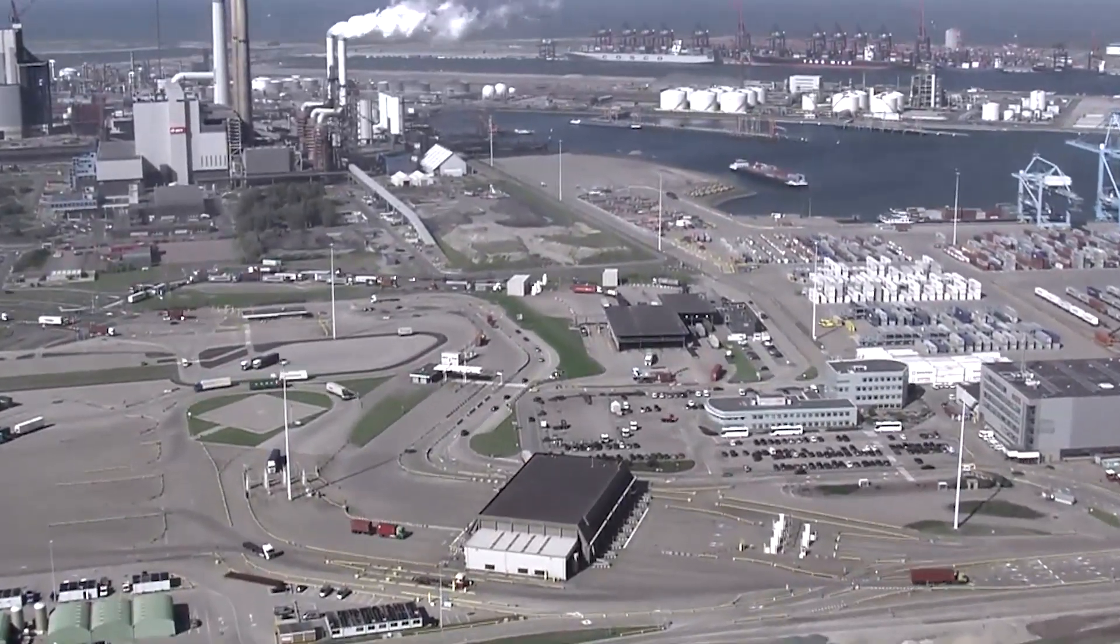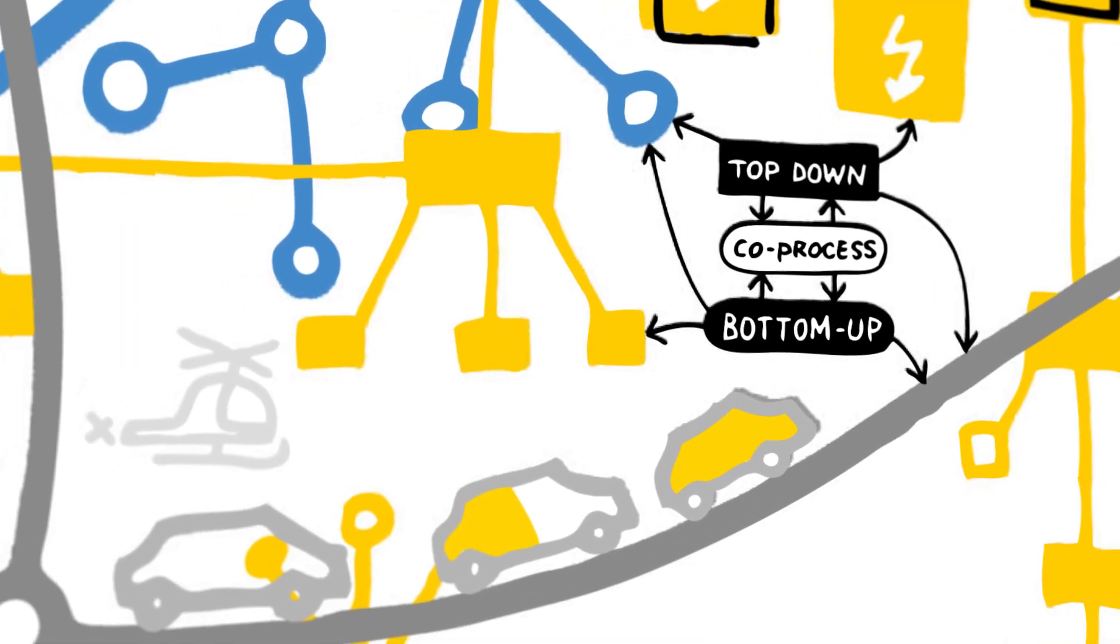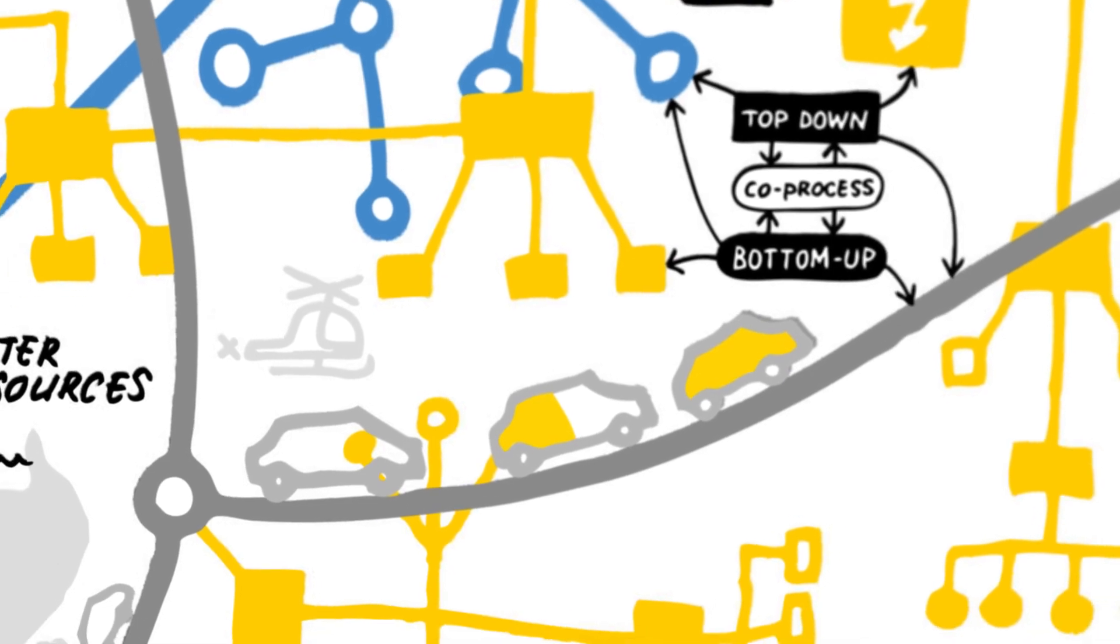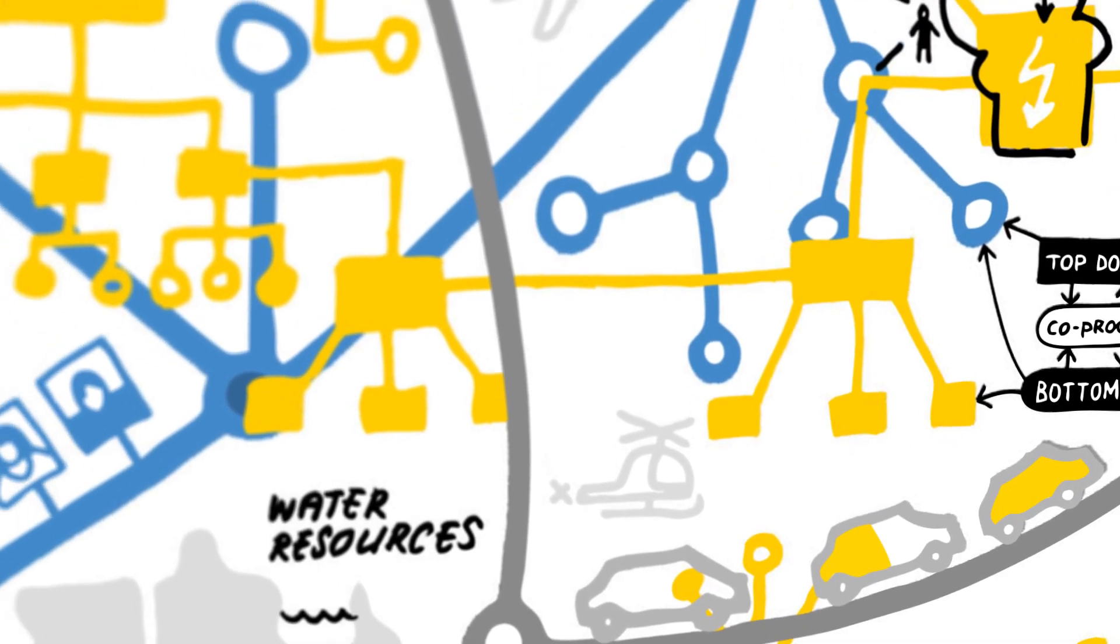For example, the liberalisation of the electricity market in Europe is an interplay between, on the one hand, a large variety of commercial companies focusing on producing.